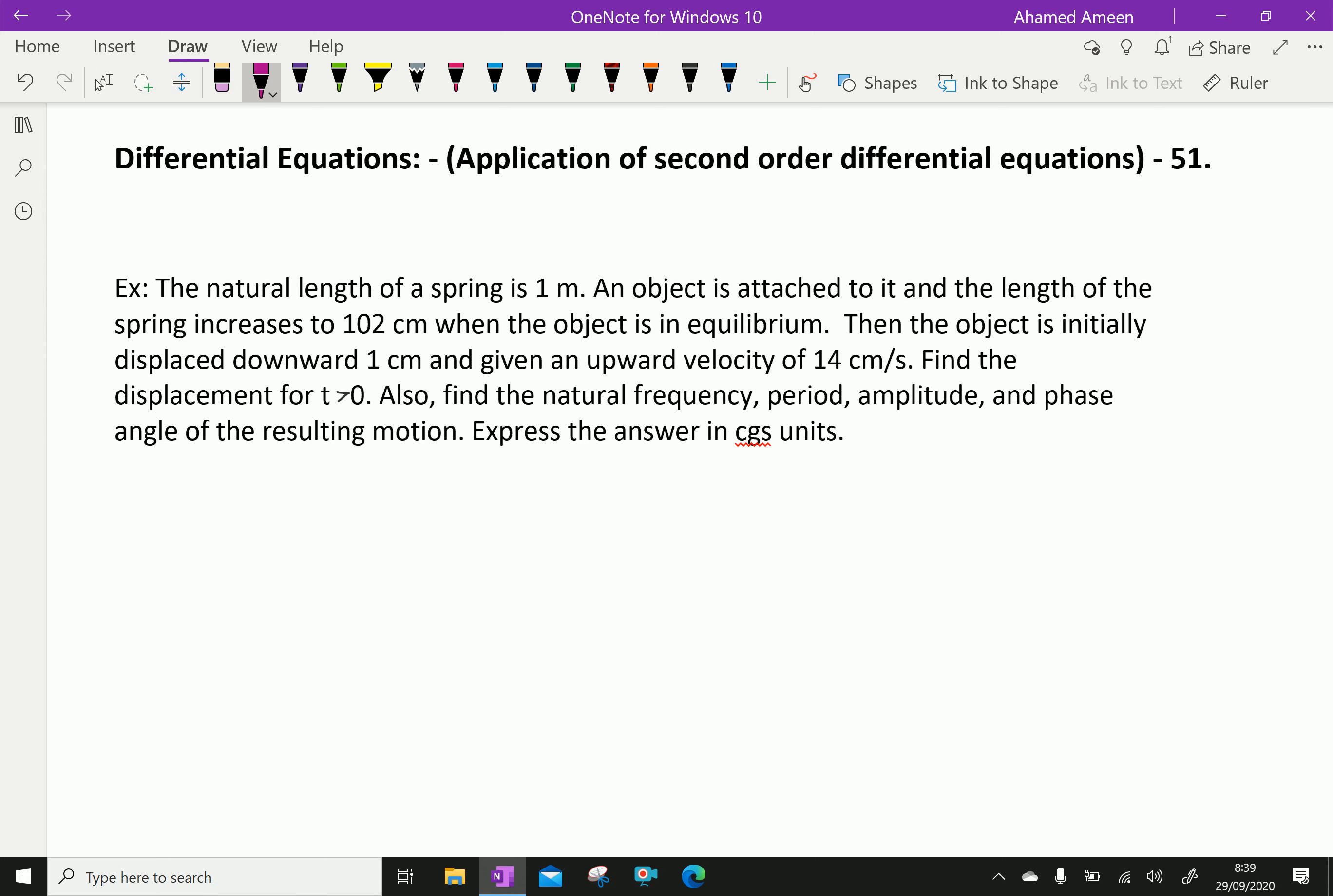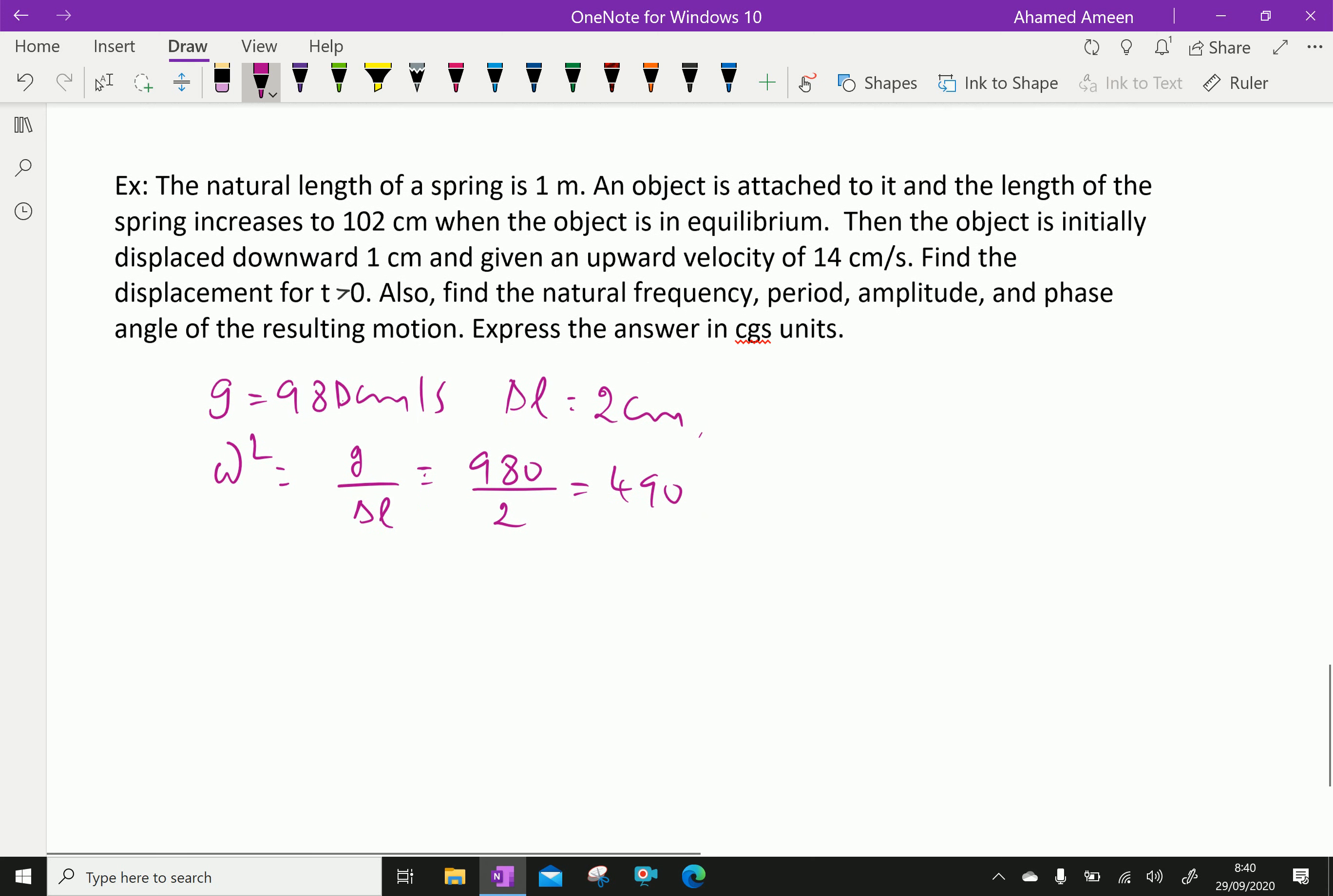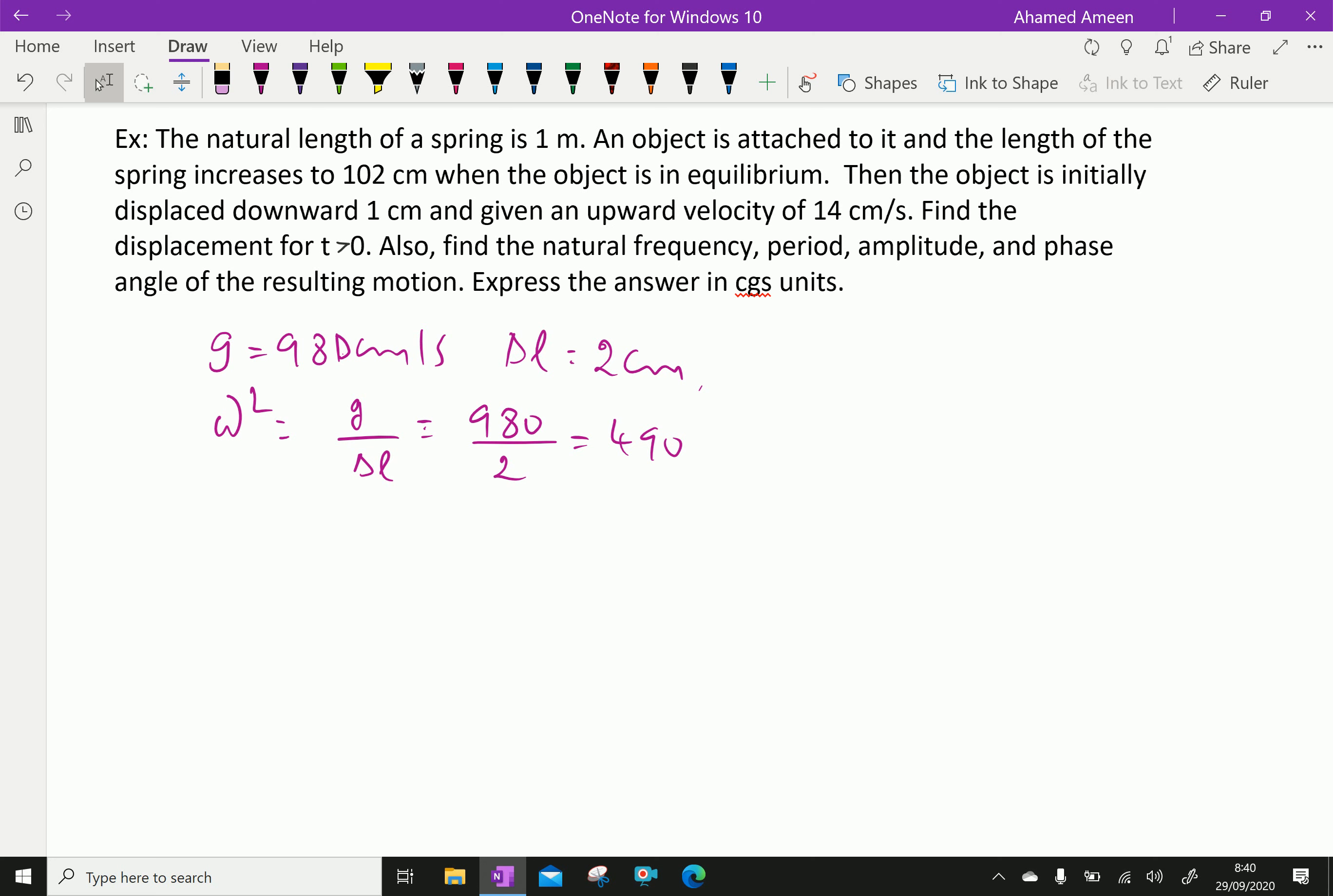The given things are gravity is 981 centimeters per second squared, delta L change in length is 2 centimeters. Here natural length is 1 meter and spring increases to 102 centimeters, that is delta L is 2 centimeters. We know that omega squared equals g by delta L, which is 980 over 2 equals 490.